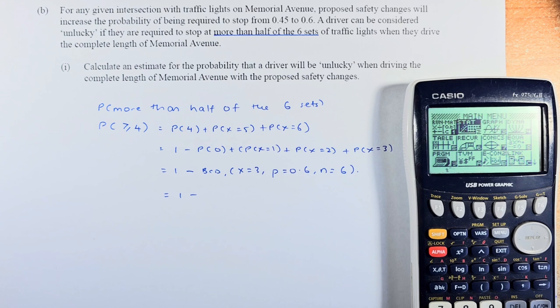For any given intersection with traffic lights on Memorial Avenue, proposed safety changes will increase the probability of being required to stop from 0.45 to 0.6. A driver can be considered unlucky if they are required to stop at more than half of the 6 sets of traffic lights. Calculate the estimate of the probability that a driver will be unlucky when driving the complete length of Memorial Avenue with the proposed safety changes.